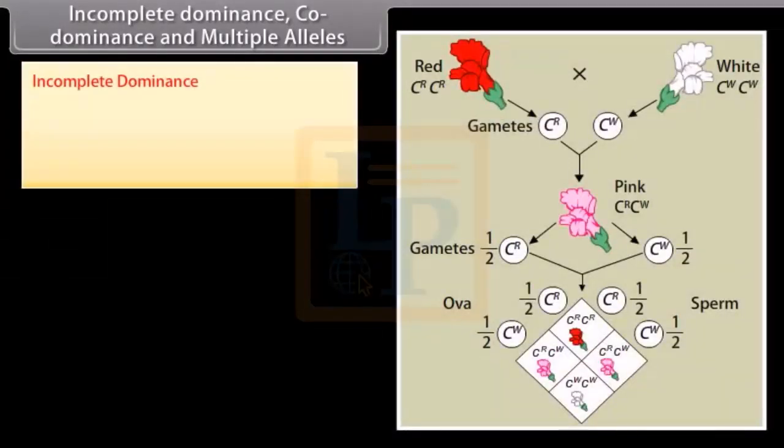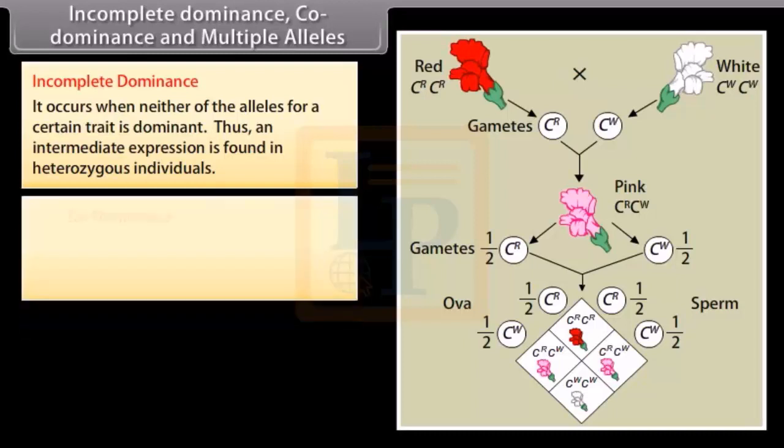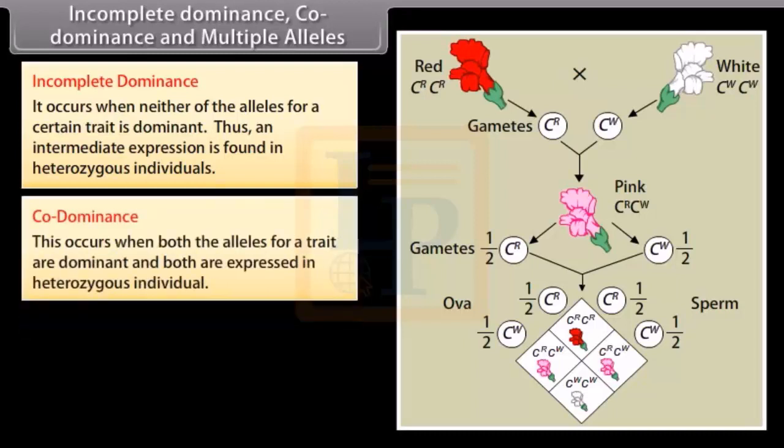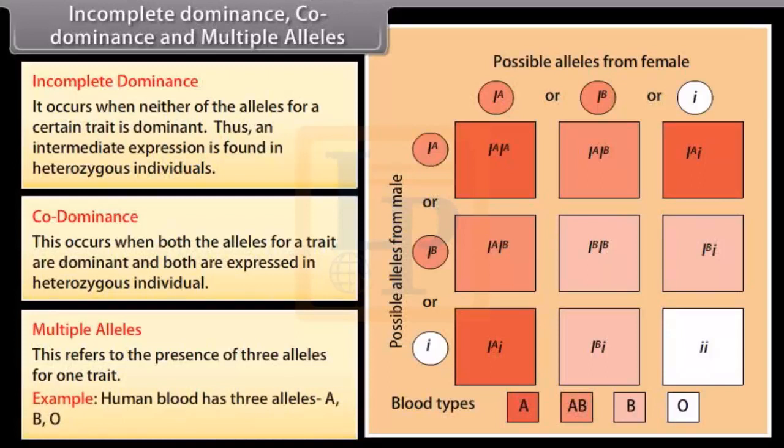Incomplete dominance, co-dominance, and multiple alleles. Incomplete dominance: it occurs when neither of the alleles for a certain trait is dominant, thus an intermediate expression is found in heterozygous individuals. Co-dominance: this occurs when both the alleles for a trait are dominant and both are expressed in heterozygous individual. Such a phenomenon can be observed with multiple alleles. Multiple alleles: this refers to the presence of three alleles for one trait. Example: human blood has three alleles A, B, O.